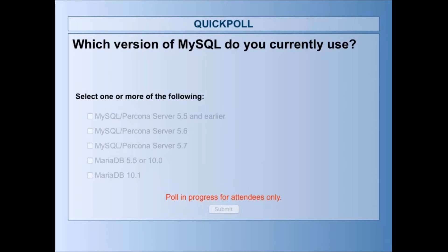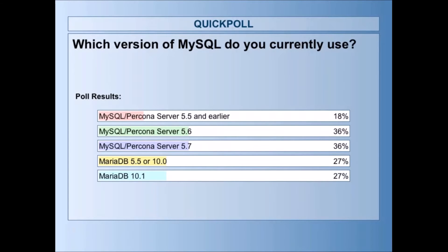I'll give it a few more seconds for everyone to participate. Thanks very much. Excellent — this is pretty even. There's an even split between MySQL 5.6 and 5.7, and same for the different MariaDB versions. We had this session earlier today for our users from Europe and the split was slightly different there. This is quite even this afternoon or this morning depending on where you are.